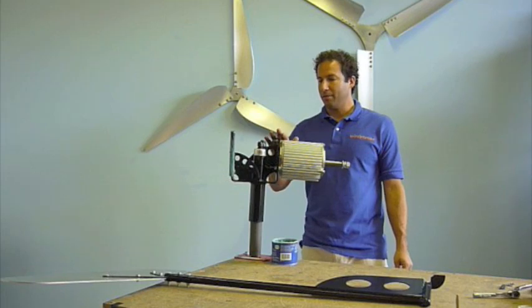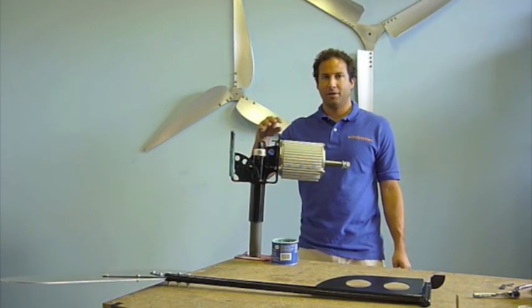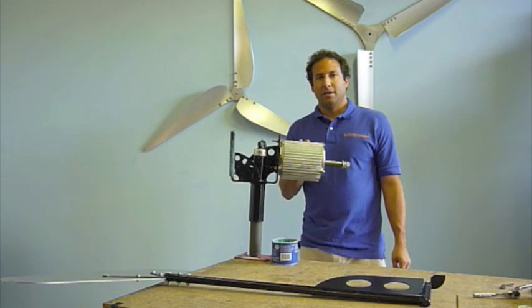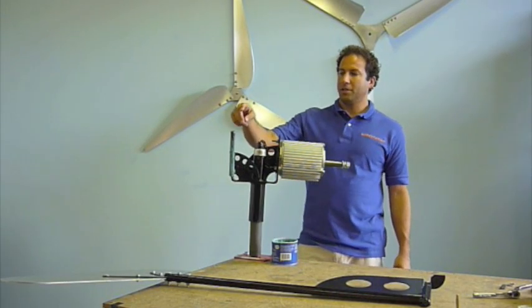All right, so now that the yaw mount is mounted to the tower and we've attached all the wires from the slip ring to the generator, the next thing we're going to do is put the entire tail assembly onto this pivot bar here.